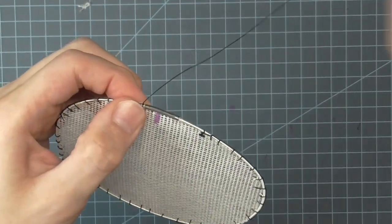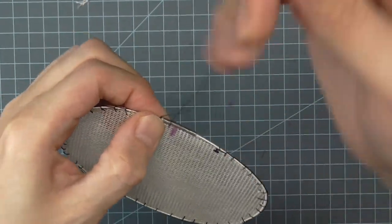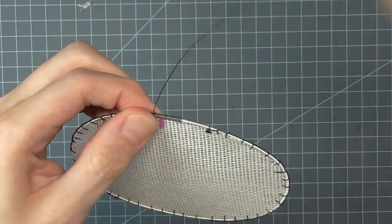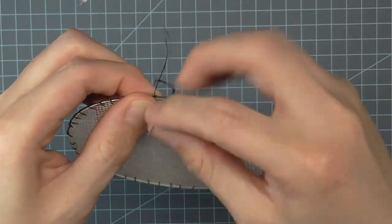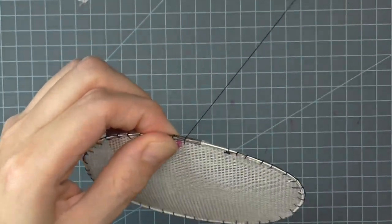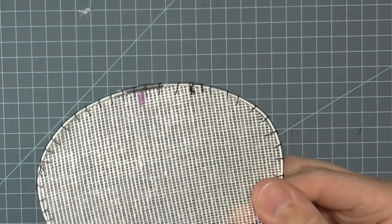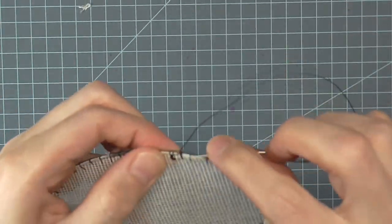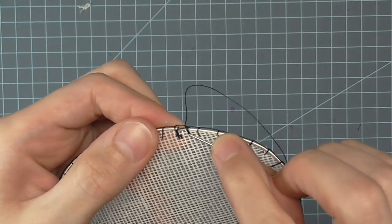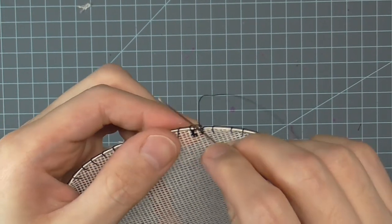Now, continue stitching. When you get to the joiner, just stitch over it as normal. When you get to the end, anchor the thread with a few small knots through the stitching, and clip the thread leaving a very short tail.